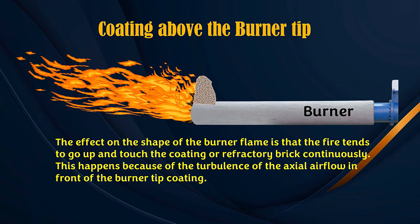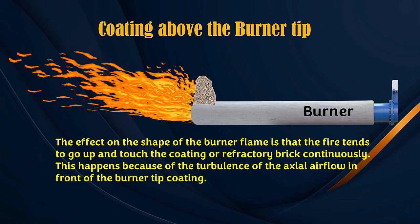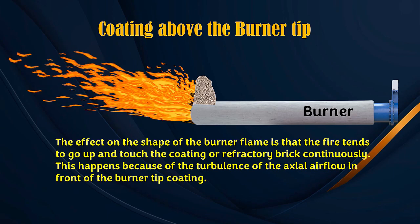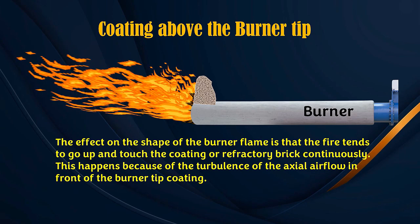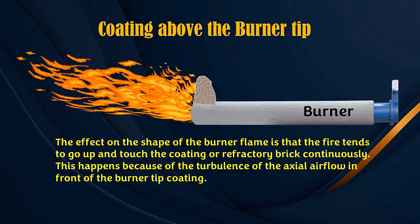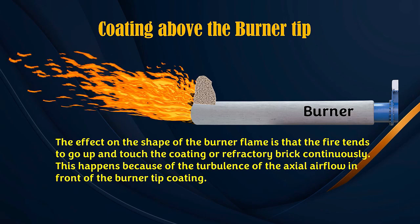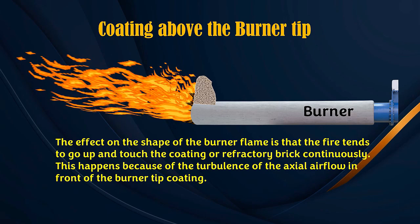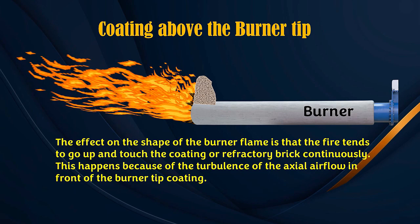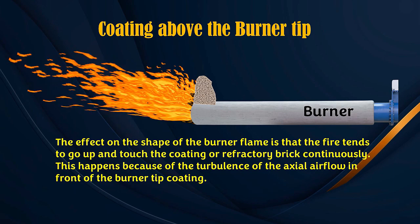The coating above the burner tip is formed due to material falling from the rotating kiln and the position of the burner entering the kiln ring. If the burner tip coating is not cleaned immediately, it will affect the shape of the burner flame and affect the combustion process in the rotary kiln.